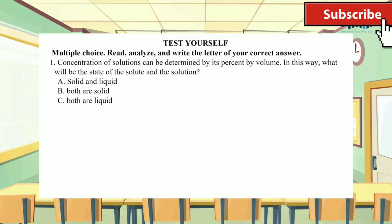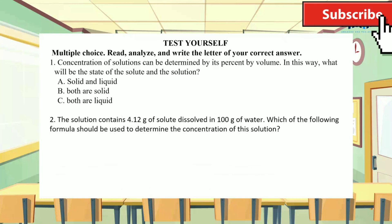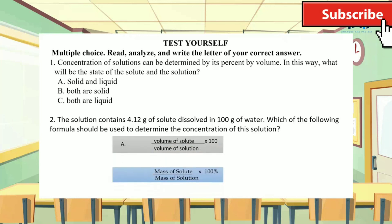Number two: the solution contains 4.12 grams of solute dissolved in 100 grams of water. Which of the following formula should be used to determine the concentration of this solution? A, B, or C?